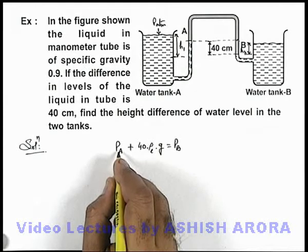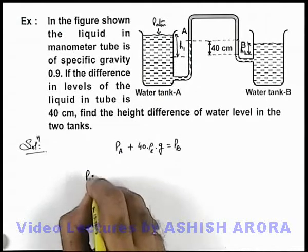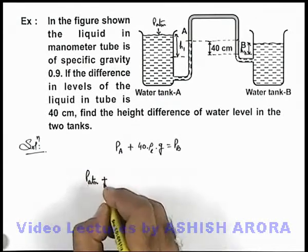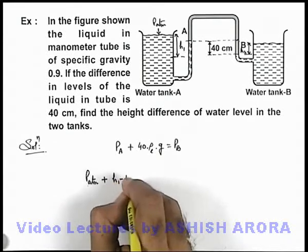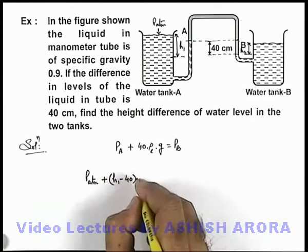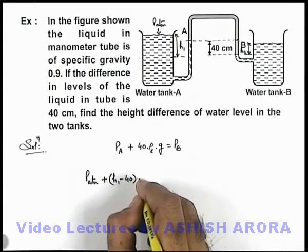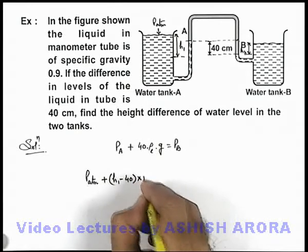Pressure at A is equal to P atmospheric plus (h1 minus 40) multiplied by ρ of water g, that is multiplied by 1 into g.